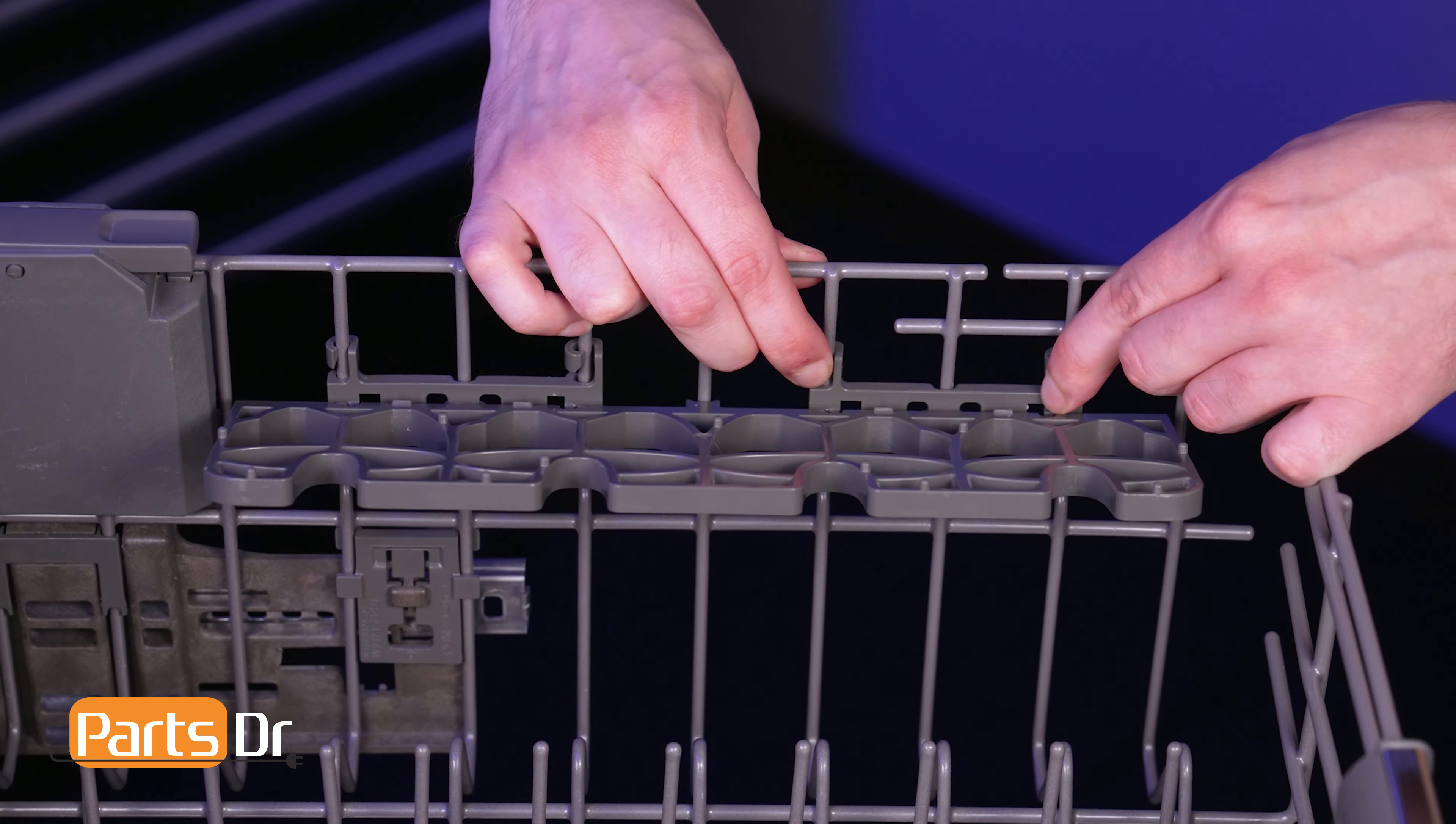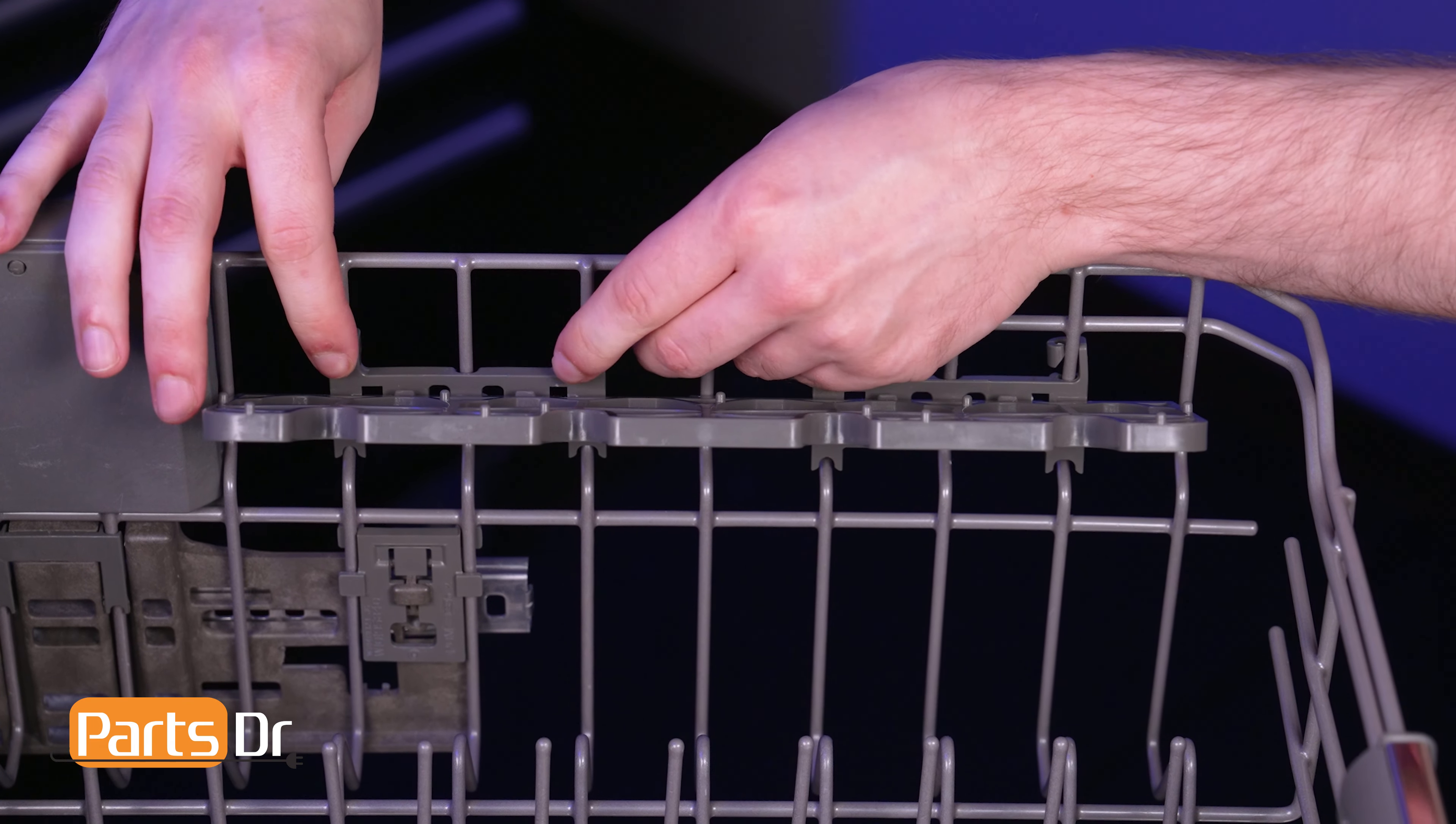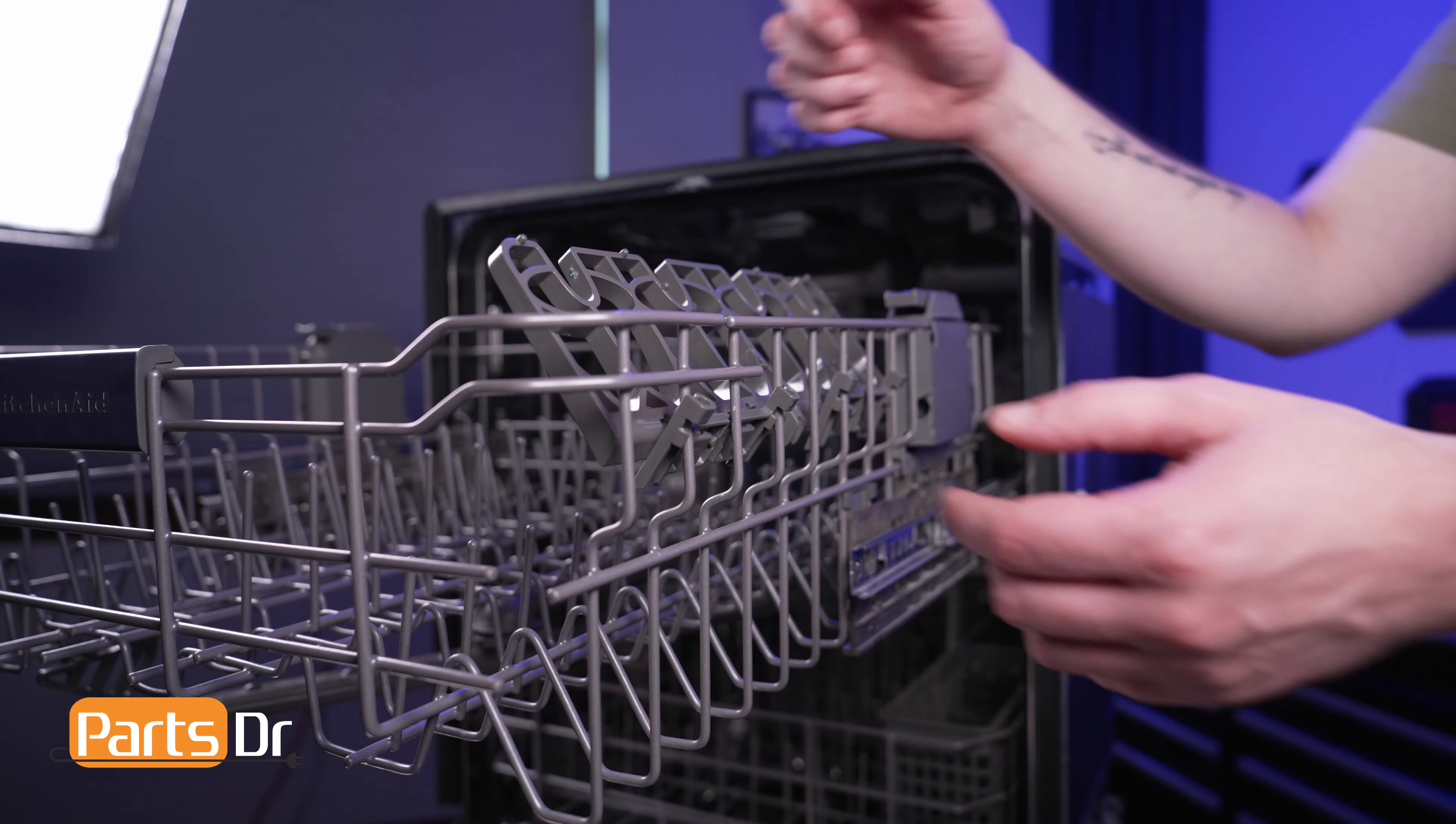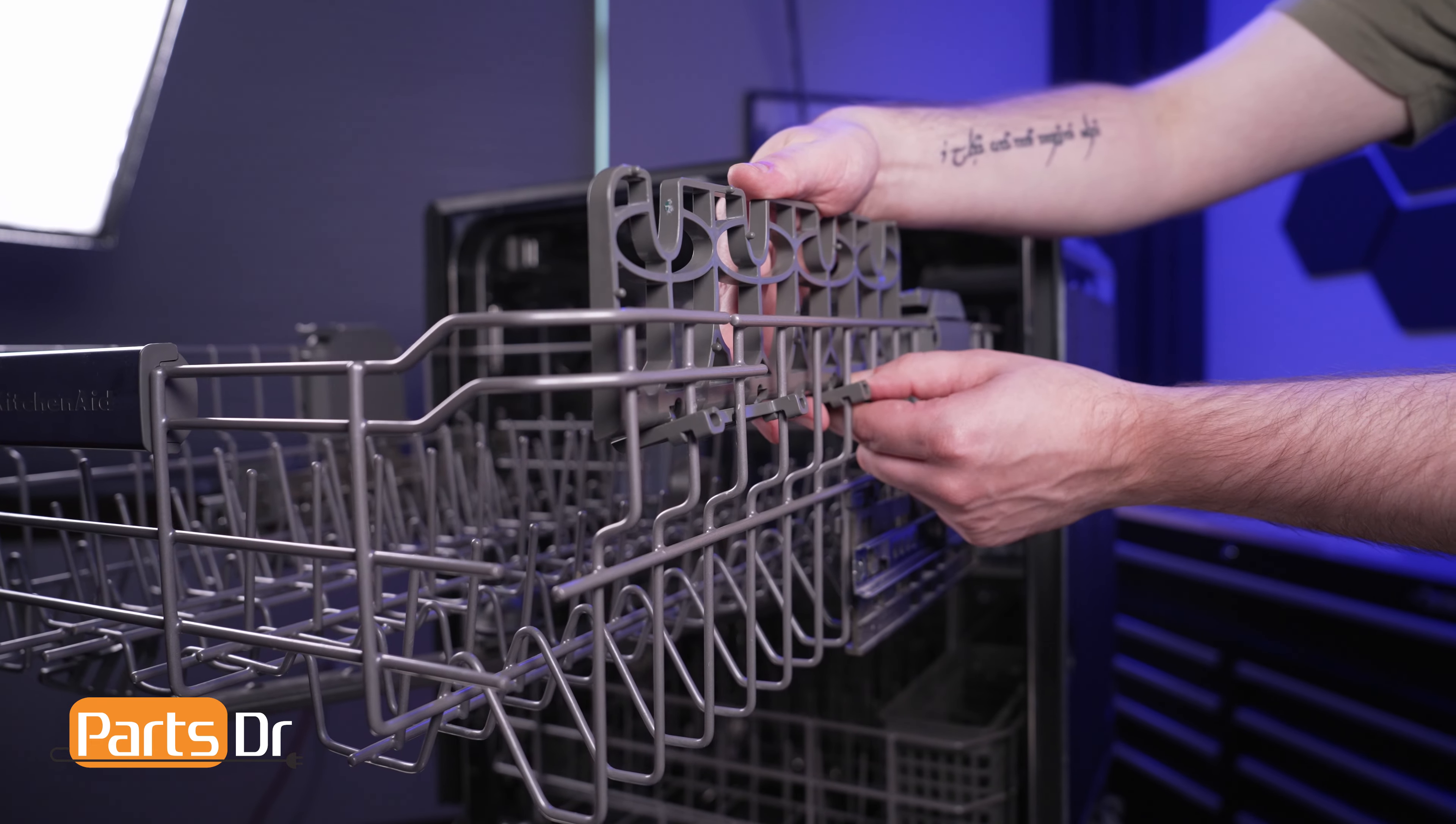To release the locking tabs, press on the inside of the locking tabs to release the bar from the cup shelf. Then rotate it towards the outside of the upper dish rack as you pull it towards the front of the dishwasher.